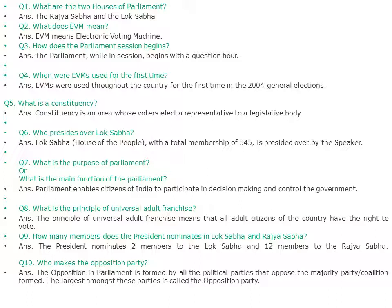Who presides over the Lok Sabha? The Lok Sabha, the house of people with a total membership of 545, is presided over by the Speaker. What is the purpose or main function of the parliament? Parliament enables citizens of India to participate in decision-making and control the government. What is the principle of universal adult franchise? The principle of universal adult franchise means that all adult citizens of the country have a right to vote.